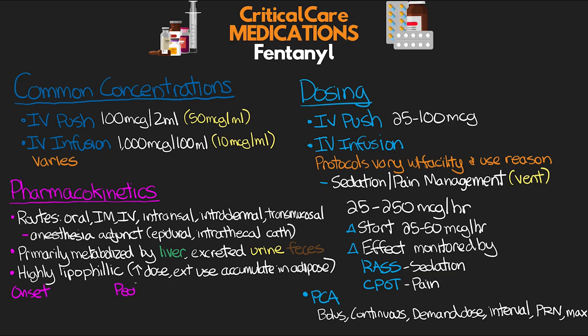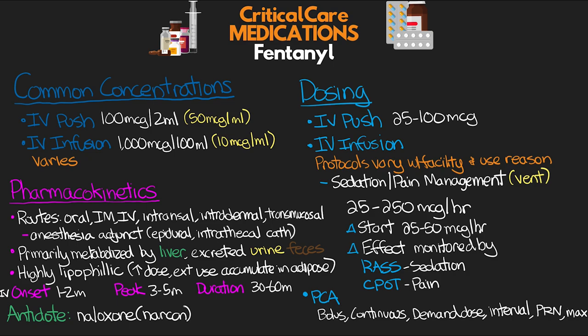Onset, peak, and duration vary by route, but for IV administration: onset is one to two minutes, it peaks in about three to five minutes, and has a short duration of just 30 to 60 minutes. The antidote is naloxone (Narcan), our opioid antagonist, given at 0.4 to 2 milligrams IV every two to three minutes up to a max of 10 milligrams, or as a continuous infusion.